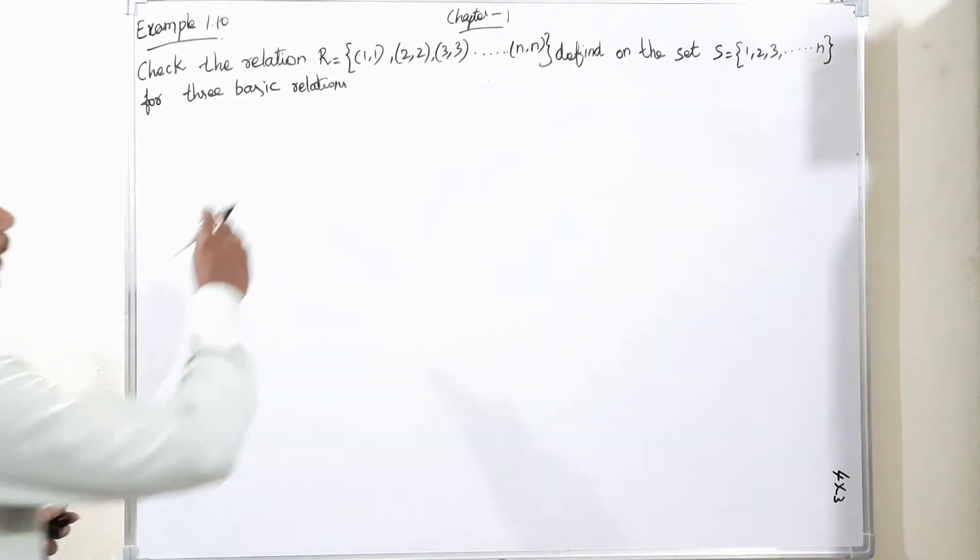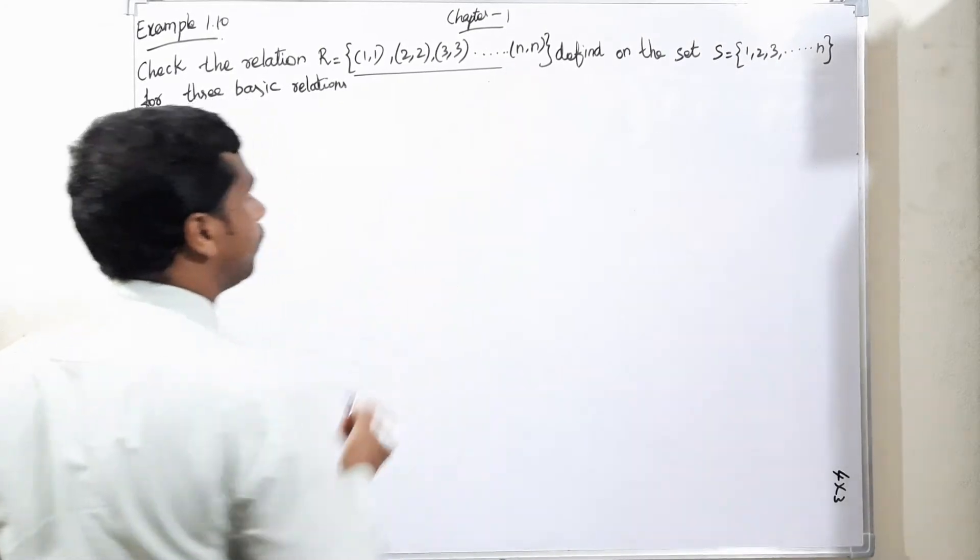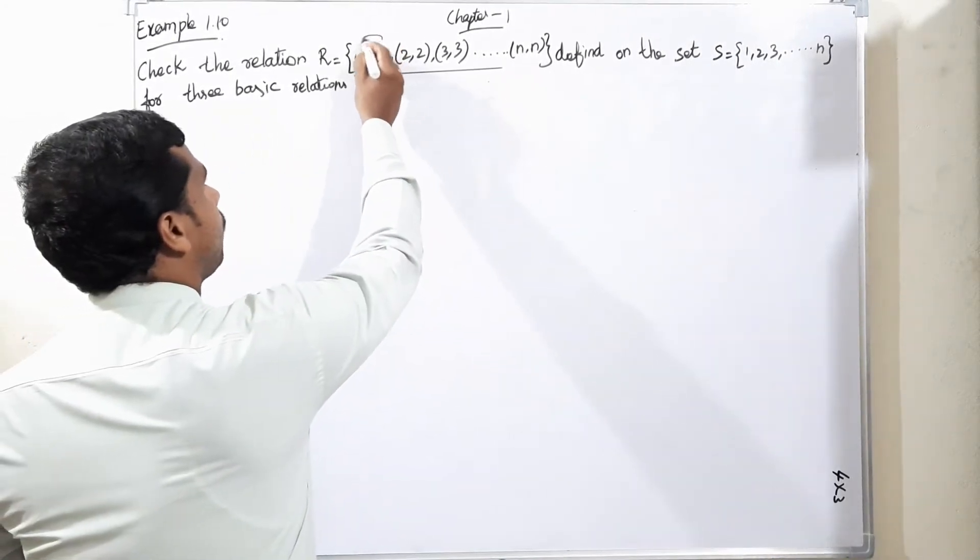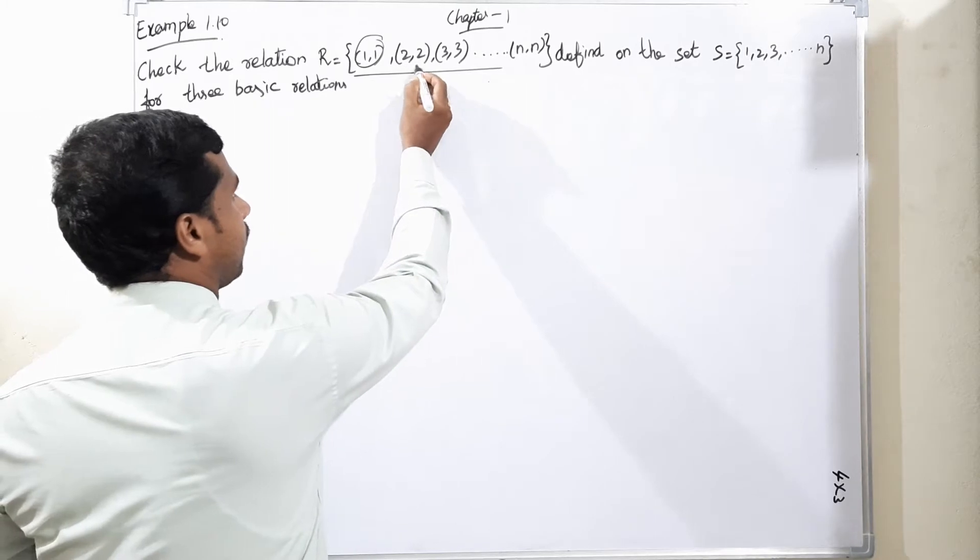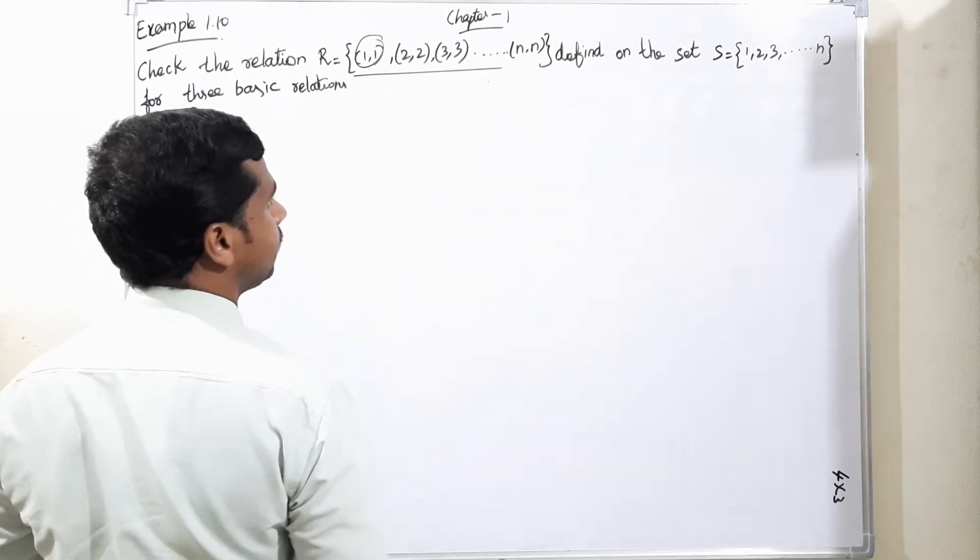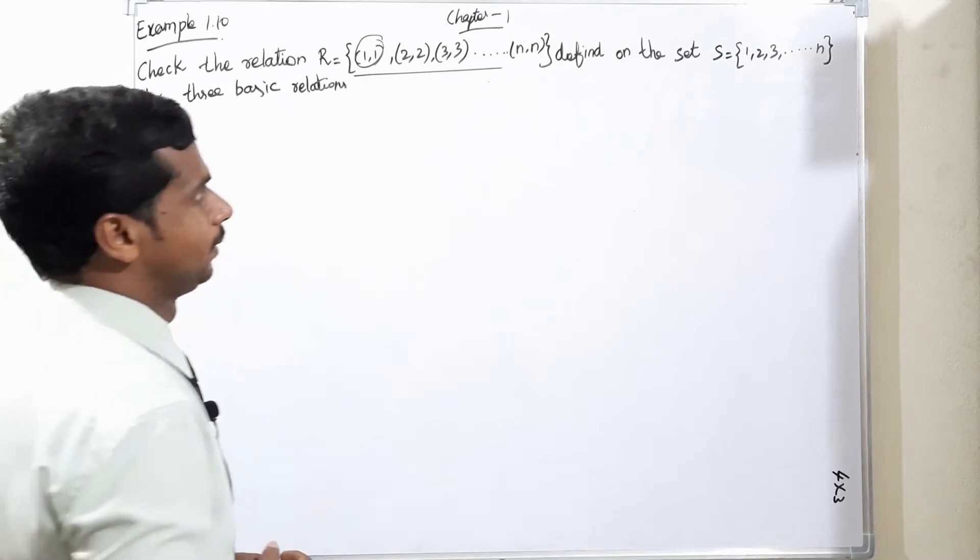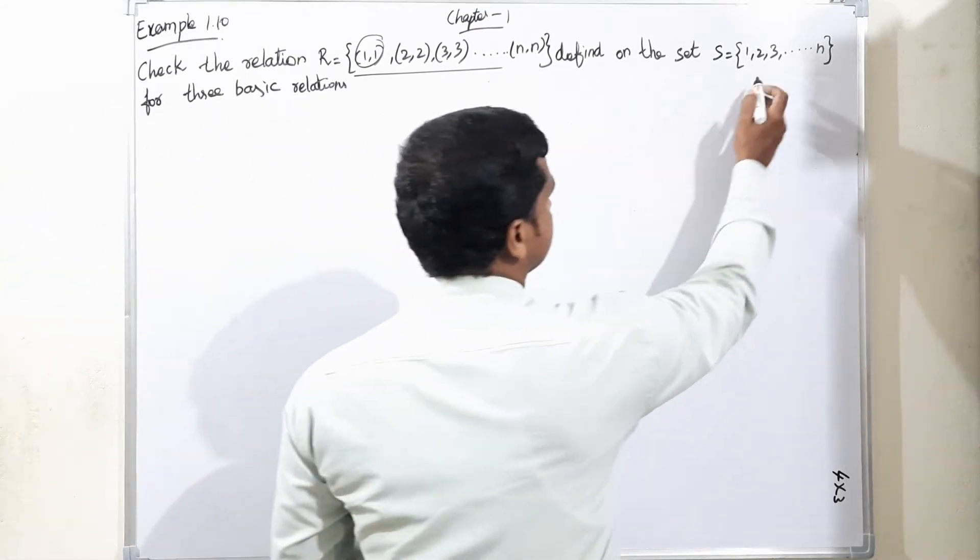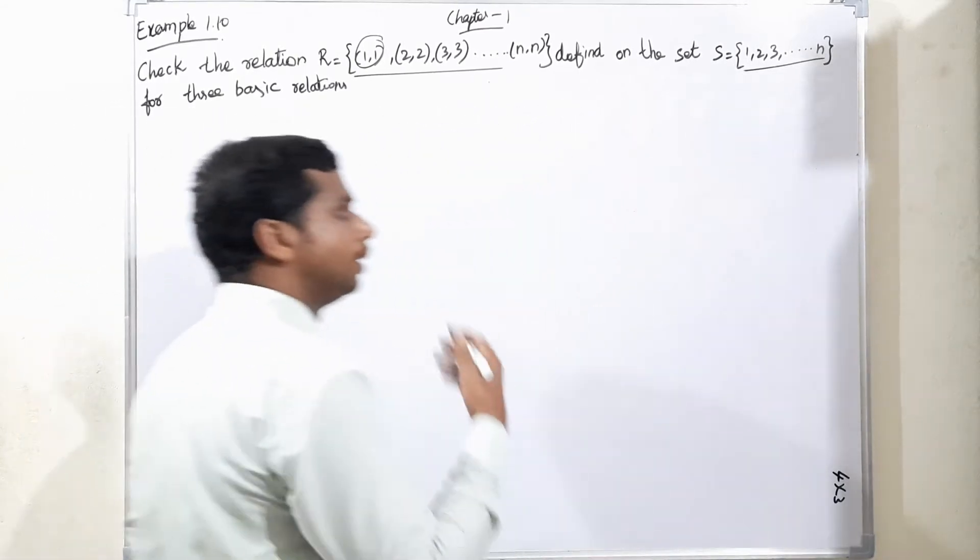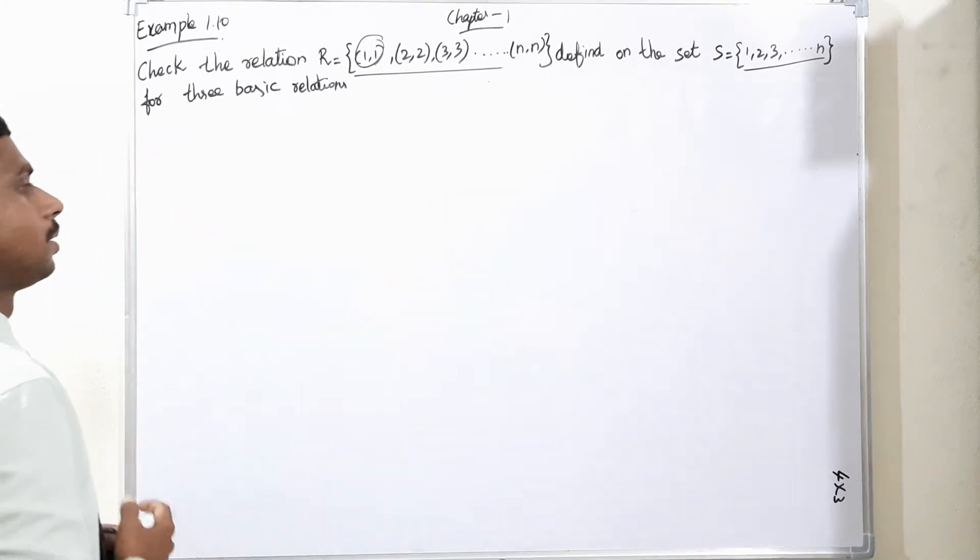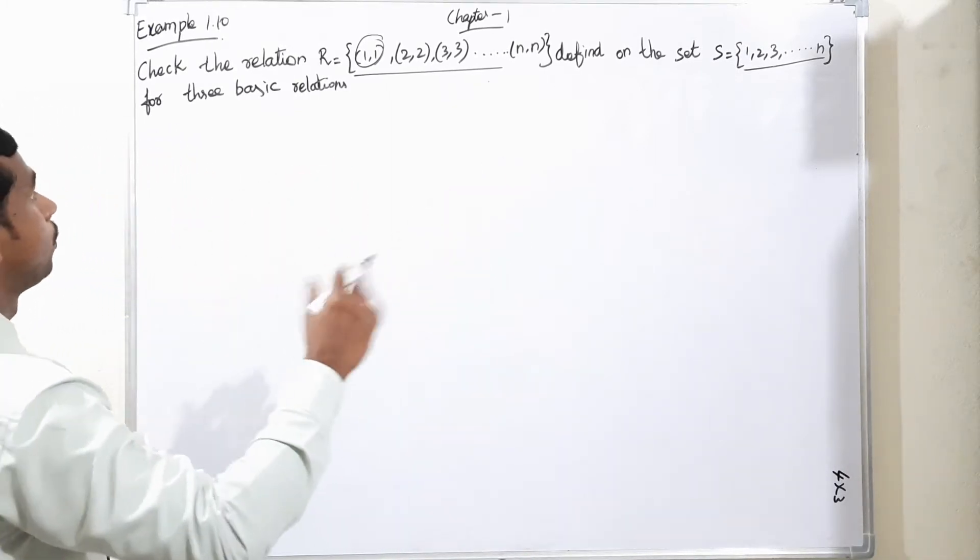Check the relation. I have given one clear condition. The set contains (1,1), another set (2,2), third set (3,3), and it is going unstoppable dot dot dot (n,n). This is defined on set S which is also unstoppable, going 1, 2, 3... positive terms onwards, moving on.